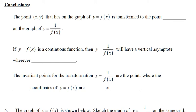Conclusion. The point (x, y) that lies on the graph of y = f(x) is transformed to the point (x, 1/y) on the graph of the reciprocal. We just take 1 over the y value.